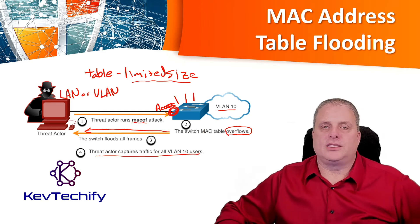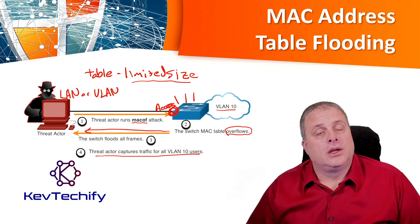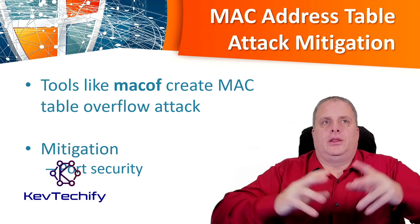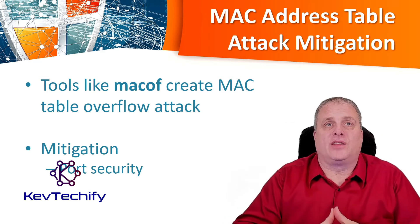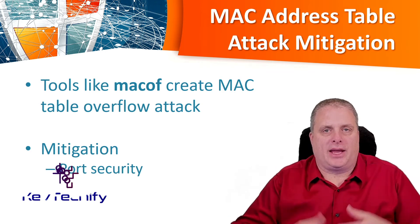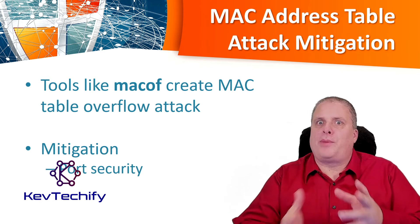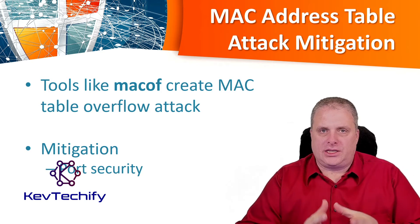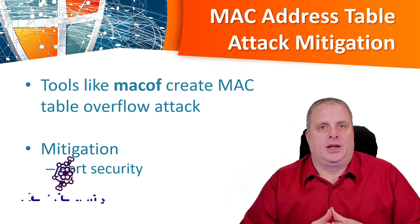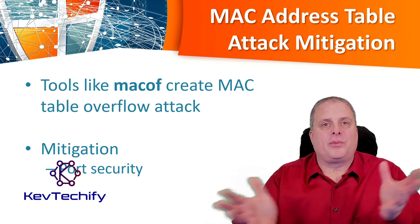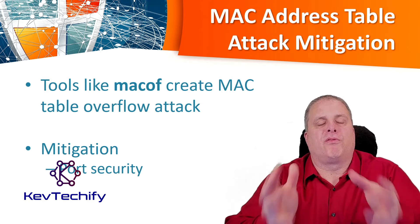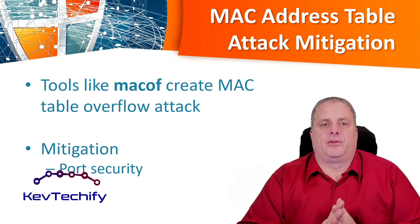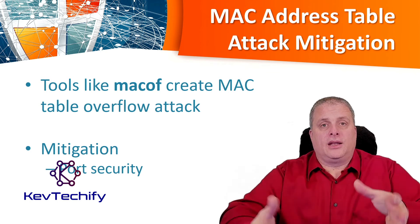The threat actor is able to capture all traffic for VLAN 10 users. Once that data is captured, they can analyze it and look for any vulnerabilities or passwords sent in clear text. MacOff is a pretty dangerous tool. The Cisco 6500 series switch, one of their bigger enterprise-level switches, can store up to 132,000 MAC addresses in its MAC address table. MacOff can generate about 8,000 false MAC addresses in about 8 seconds, and the ARP cache stays full for at least 2 minutes, sometimes up to 5 minutes. The MacOff tool takes about 16 to 17 seconds to fill up all 132,000 entries with false information, and the attacker can simply keep running the tool to maintain that flooded state.